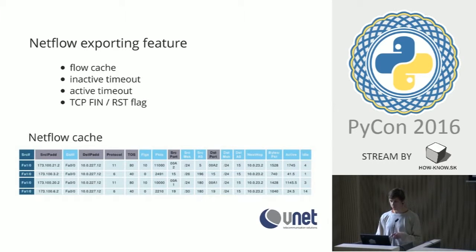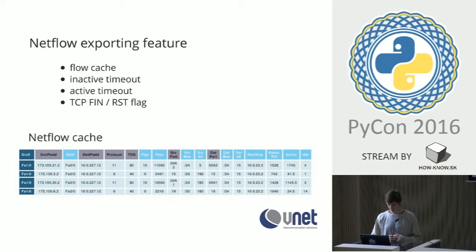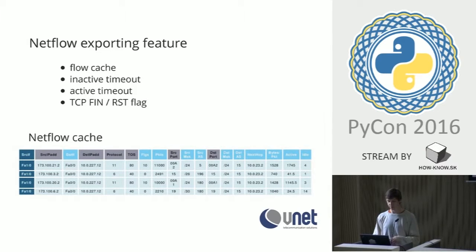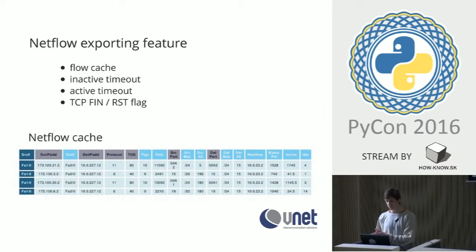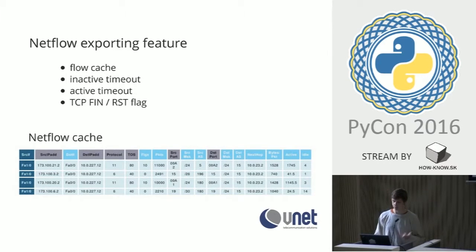This is important when talking about detection, because these timeout values influence the reaction time of the system. When the flow is inactive for the inactive timeout period, it gets exported and removed from the cache. If it's still active but reaches the active timeout, it also gets exported. For TCP flows, as soon as a FIN or RST flag is encountered, the flow is exported immediately.